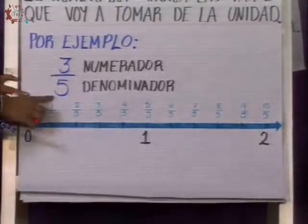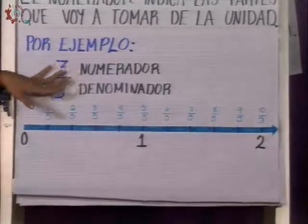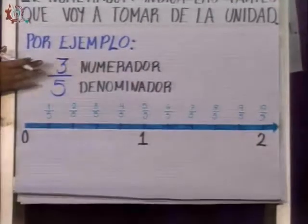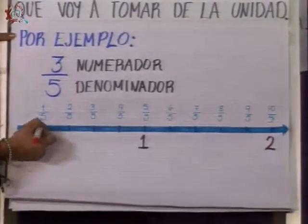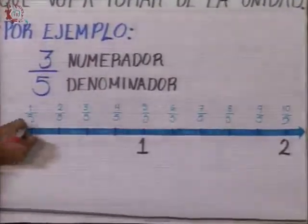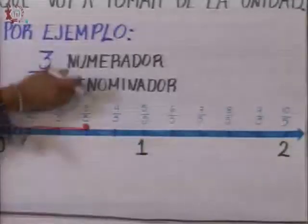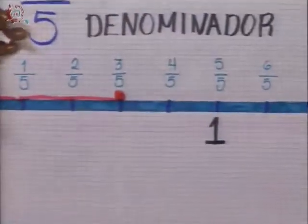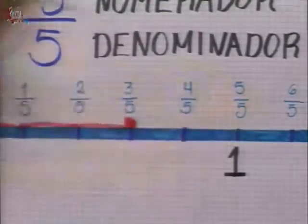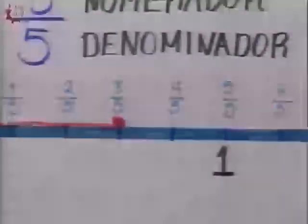Tengo la fracción 3/5 y ya dividí mi recta numérica en cinco partes, voy a tomar solamente tres partes. Entonces, si yo quiero ubicar esta fracción en la recta numérica, tomo una parte, dos partes, tres partes, y en este punto donde yo estoy localizando es la parte que me representa tres quintos. Como les indiqué, el denominador me indica cuántas partes se divide la unidad, el numerador me va a indicar cuántas partes voy a tomar de esa unidad.